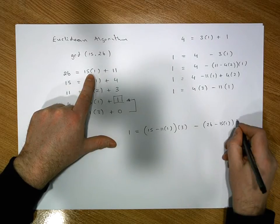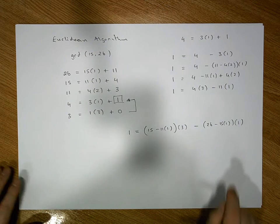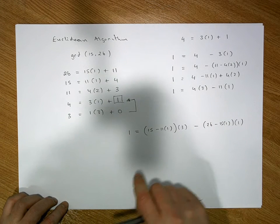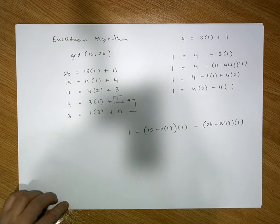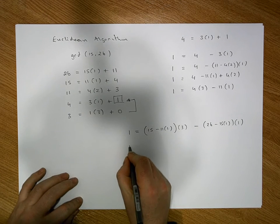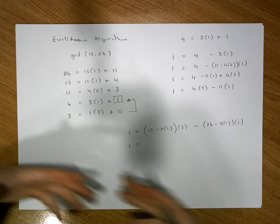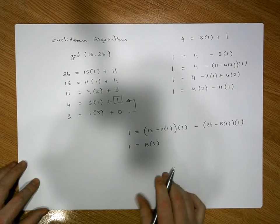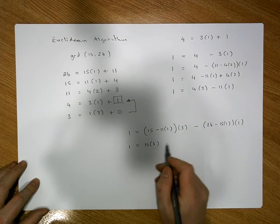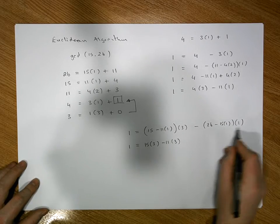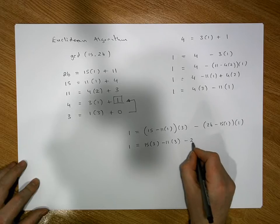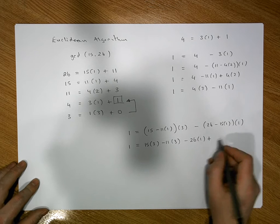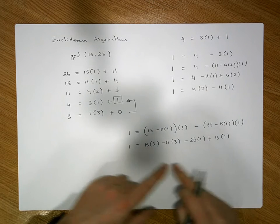When we back substitute, we only substitute into the remainders — the non-remainders stay inside the brackets. Multiplying out the brackets — we just juxtapose the numbers together — so 15 times 3 is 15 times 3, minus 11 times 1 times 3 is minus 11 times 3. Over here, minus 26 times 1 is minus 26 times 1, and minus times minus gives us a plus, so 15 times 1 times 1 gives us 15 times 1.